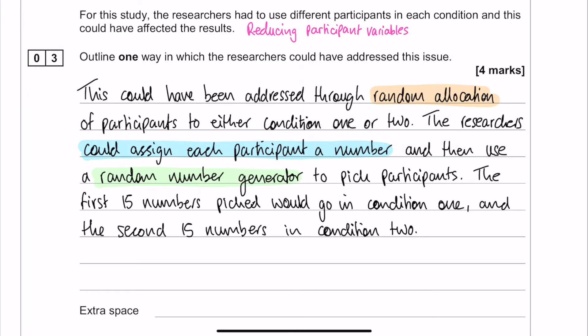You could of course also use a matched pairs design to deal with the issue, but at the time when this question came out in the exam, a lot of people struggled to provide enough detail about what the participants might be matched on and how the matching might be carried out and how the participants would then be distributed across the conditions. So for some reason, the random allocation just generally got more marks. So that is what I decided to do for this question.